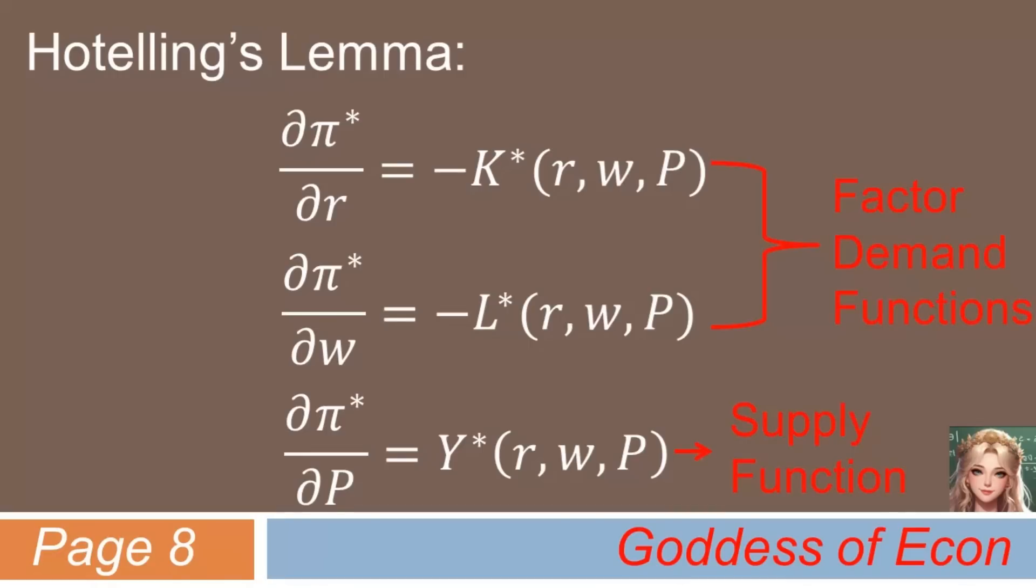Another way to explain Hotelling's Lemma is that if the firm makes its choices to maximize profits, then the choices can be recovered from the knowledge of the firm's maximized profit function. Also, I would like to add that Hotelling's Lemma can be proven by using a mathematical result called the envelope theorem, which I hope to cover someday in another video.